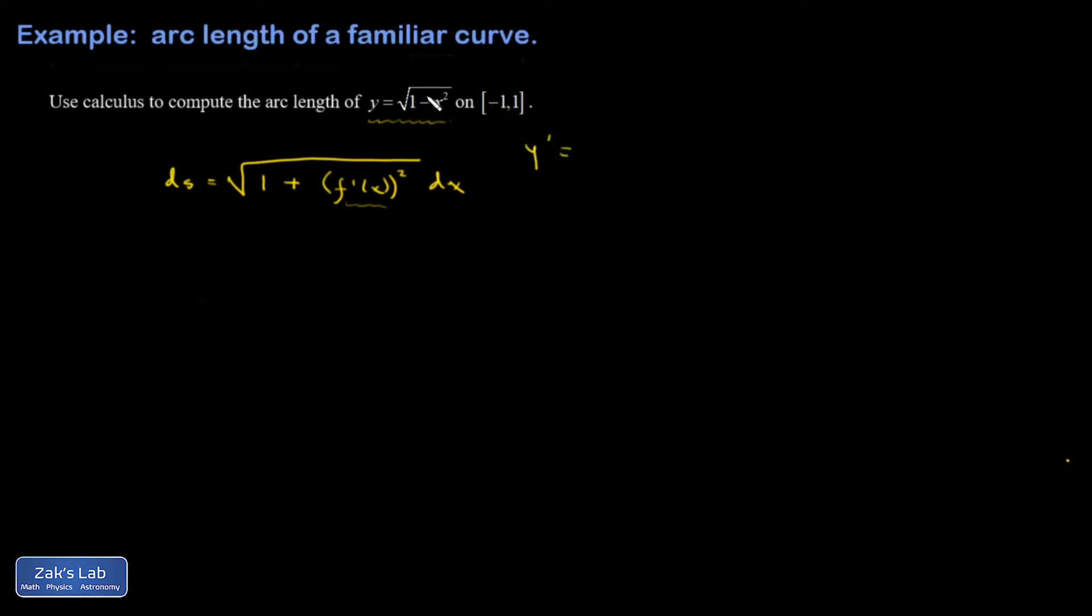So this is really 1 minus x squared all to the 1 half power. So I get 1 half 1 minus x squared to the negative 1 half power multiplied by the derivative of the interior. That's the chain rule working there. And so y prime turns out to be negative x. I canceled the twos over the square root of 1 minus x squared.